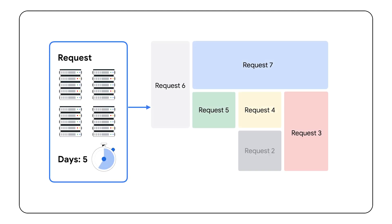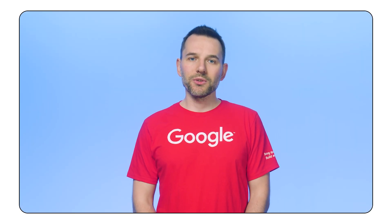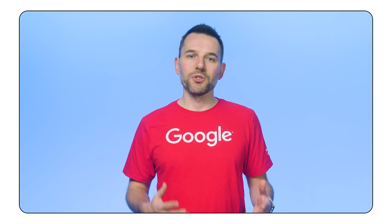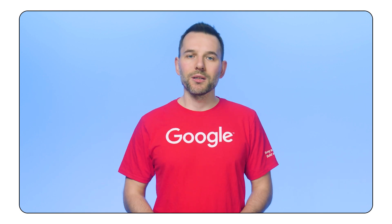The idea behind this approach is that you let Google Cloud know what resources you need and for how long. Your request is then added to a queue, and once the resources are available, they are delivered to your project all at once. A great benefit of this approach is that you only pay for the resources when you can use them — no need to slowly acquire a GPU after GPU, paying for them while you wait for the required number.